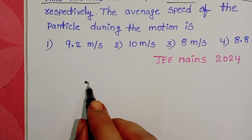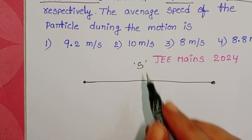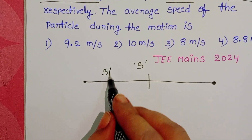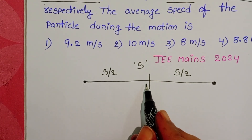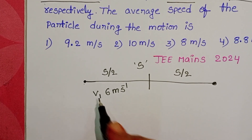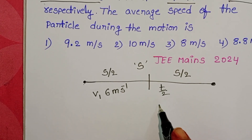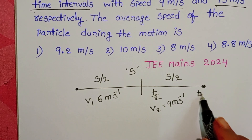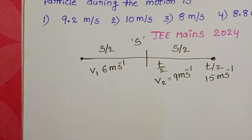A particle is moving along a straight line path. Let the total distance travelled by the particle be S. This total distance is divided into two equal parts: first part S/2 and second part S/2. The first part is covered with speed V1 = 6 meters per second. The next part is travelled in equal time intervals — the first half of time at 9 m/s and the next half at 15 m/s. We need to find the average speed.